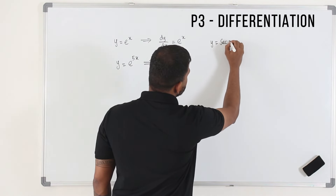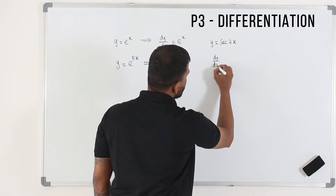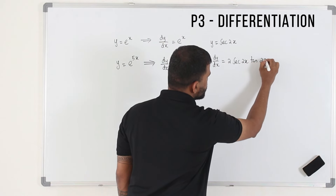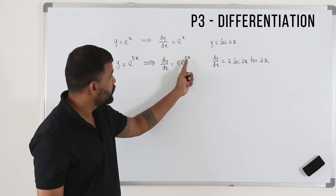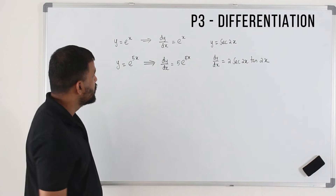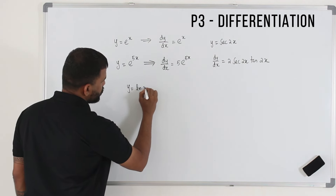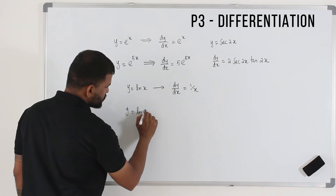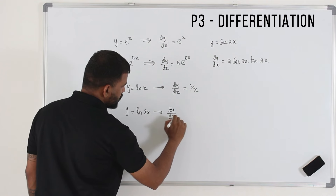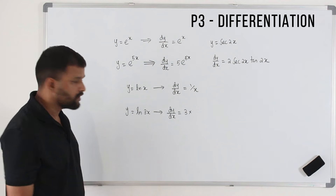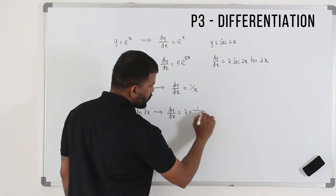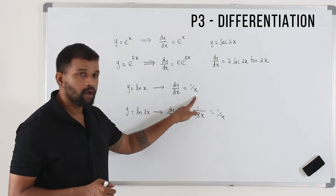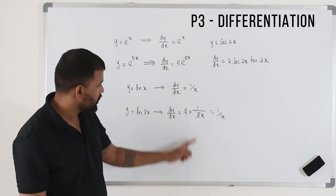For example, y equals secant 2x: dy/dx is 2 times secant 2x tan 2x — just put the coefficient of x in front. For the logarithm, the derivative of ln x is 1 over x. If you have ln 3x, you put 3 in front times 1 over 3x, and the 3 cancels, giving 1 over x. So the derivative of ln x and ln 3x are both 1 over x — that number cancels out. For y equals 8 power x, the derivative is 8 power x times ln 8.